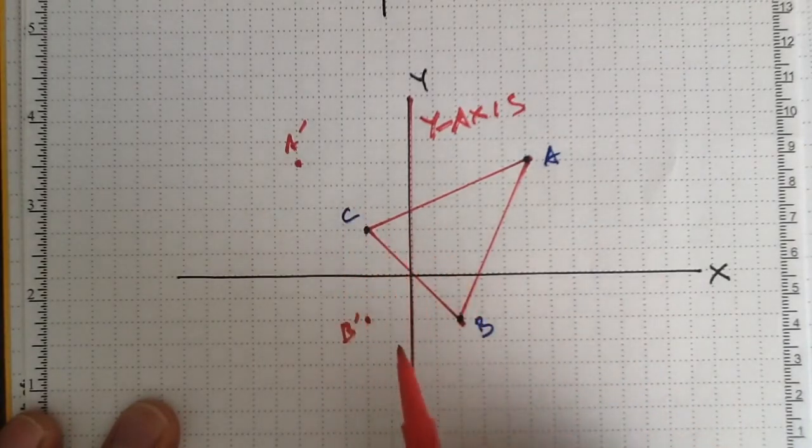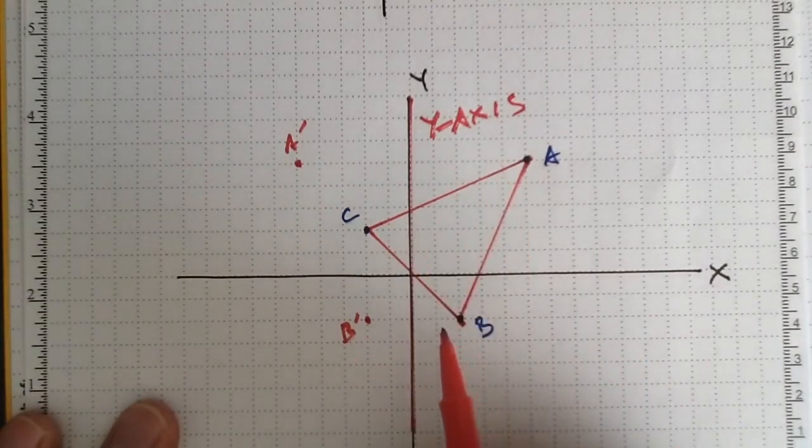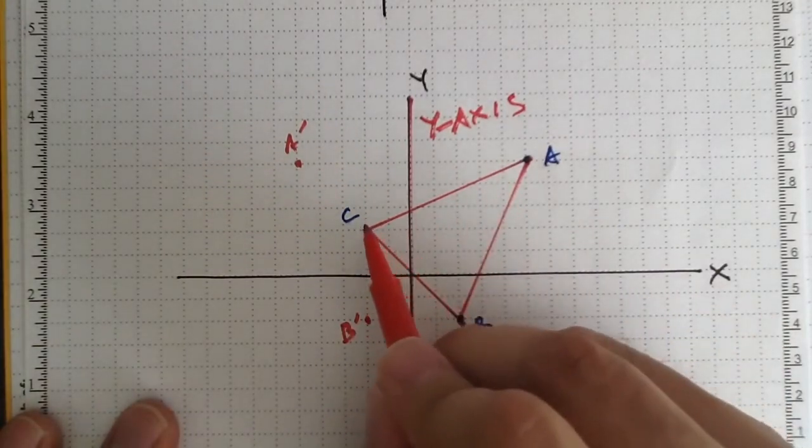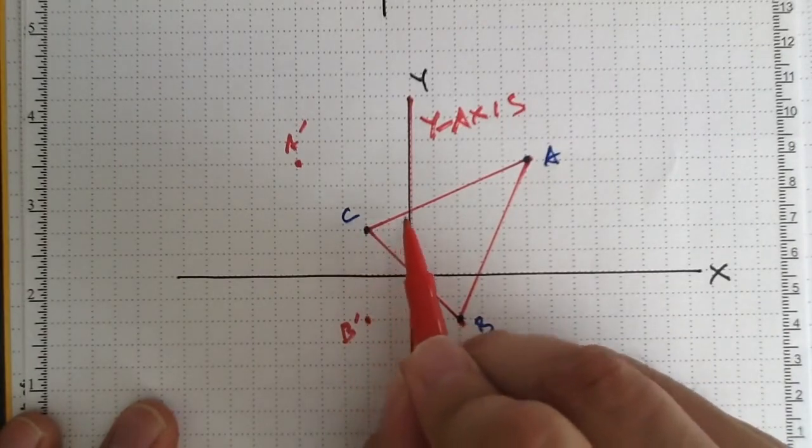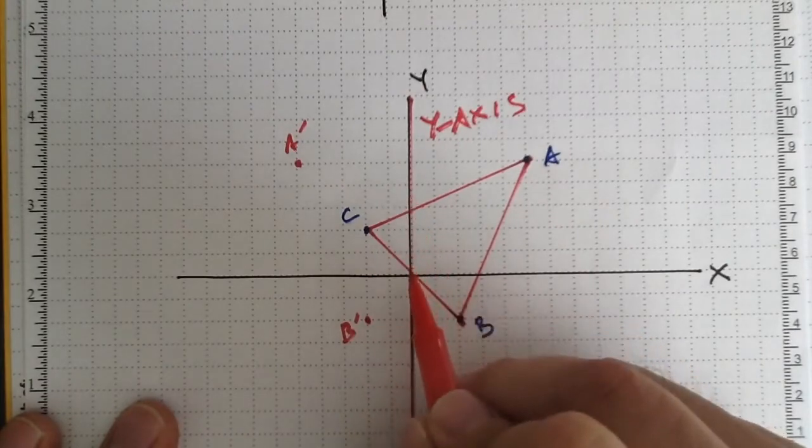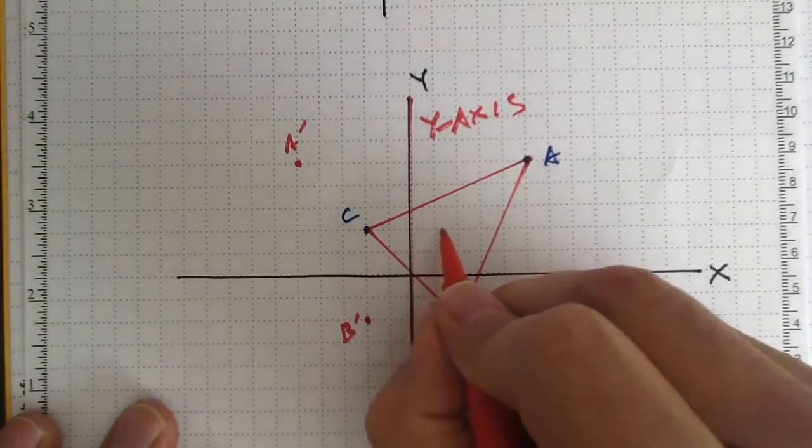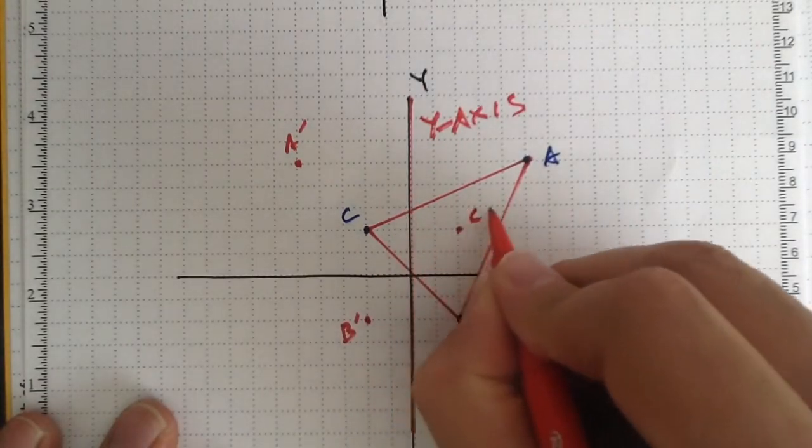Now, this is where sometimes it gets a little tricky, and that's why I included this example. You'll notice how the other side of the triangle is already on the opposite side of the mirror. Okay, well, you do it no differently though. C is 2 spaces away on this side of the line of reflection, so I want to go 2 spaces in the opposite direction, and that's where C prime will go.